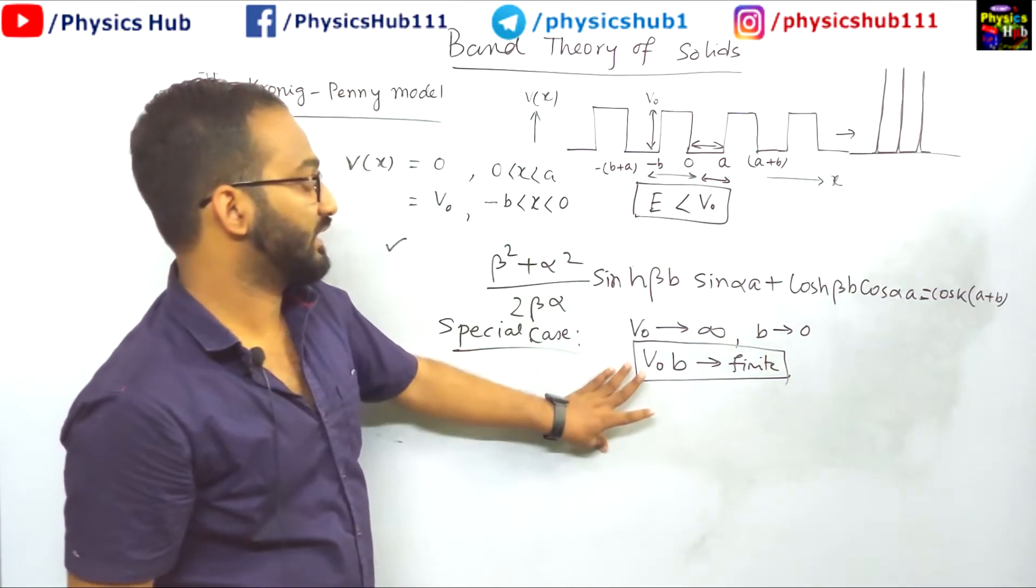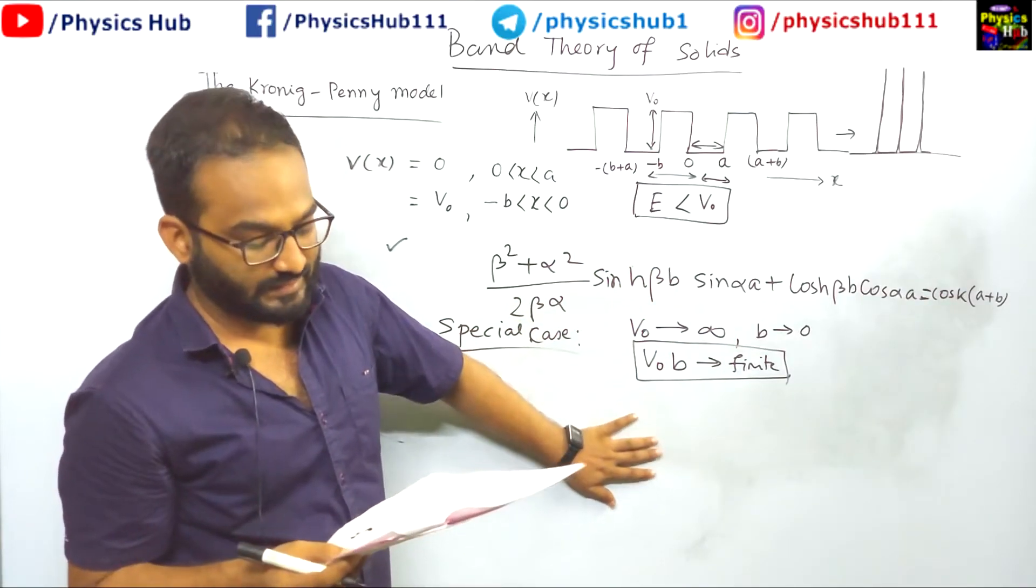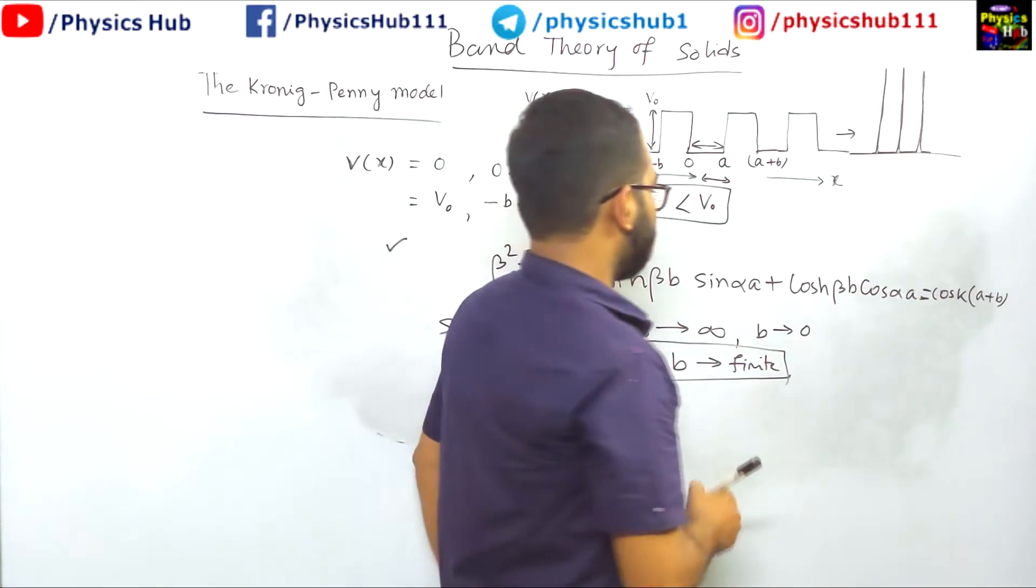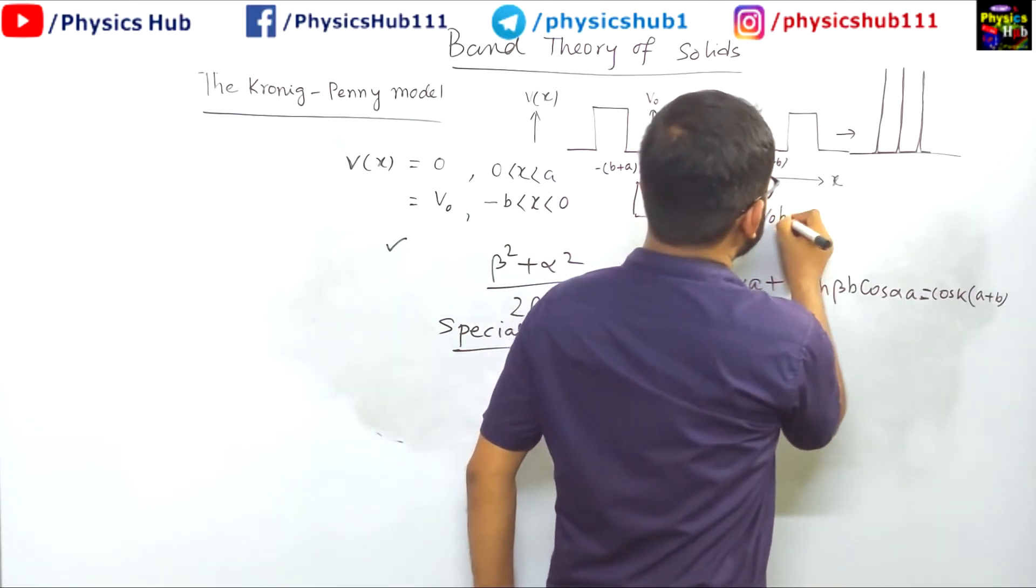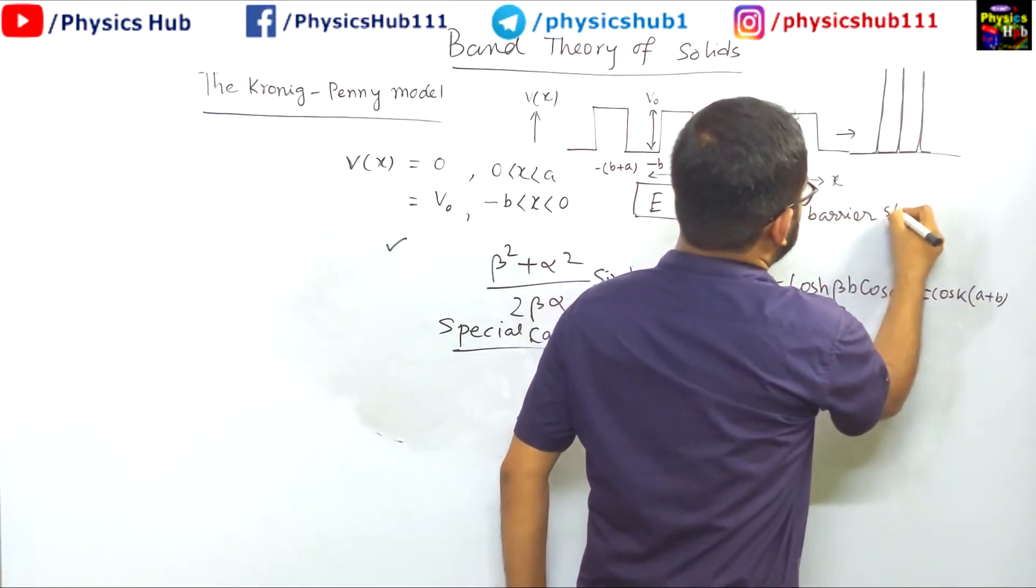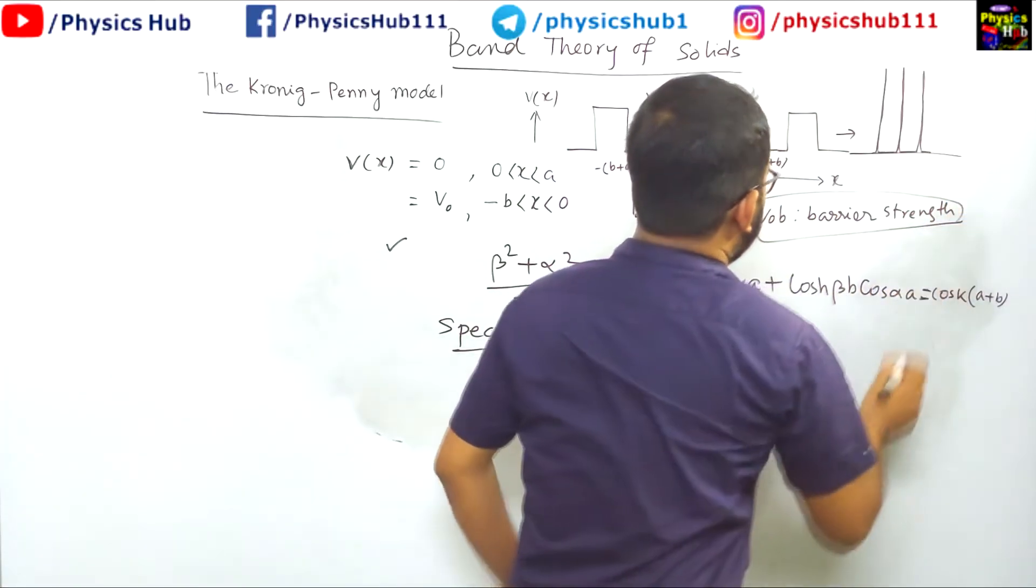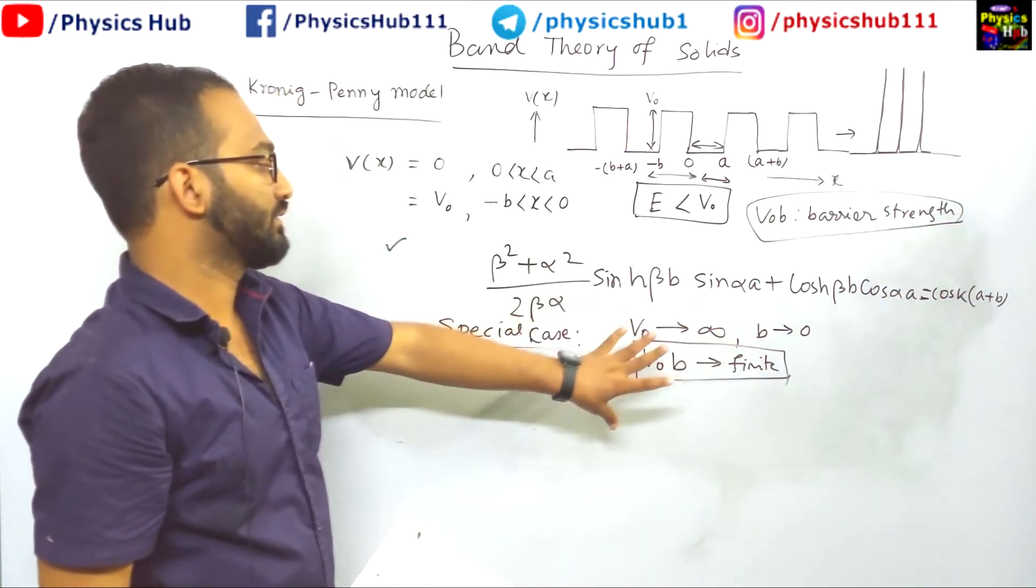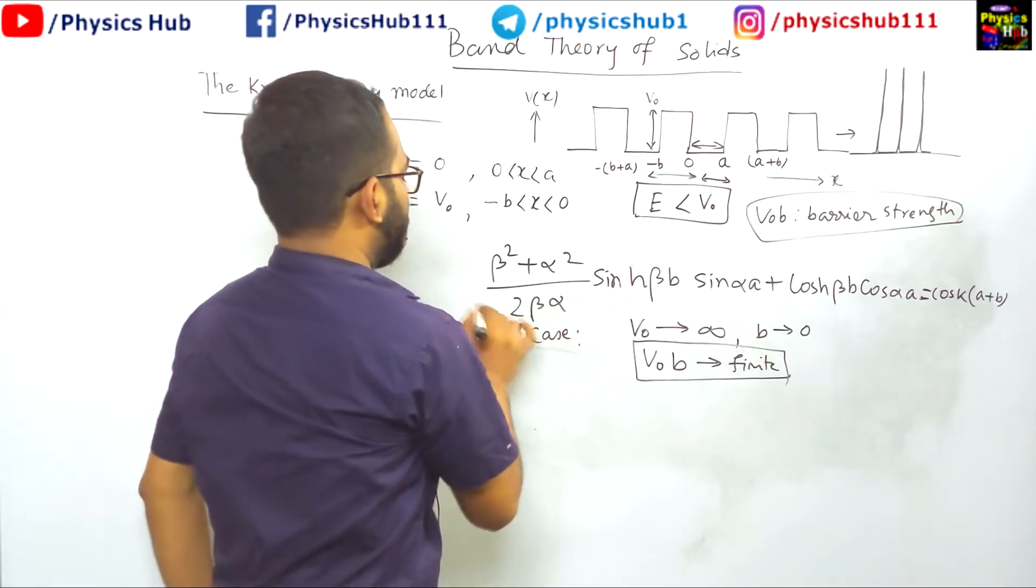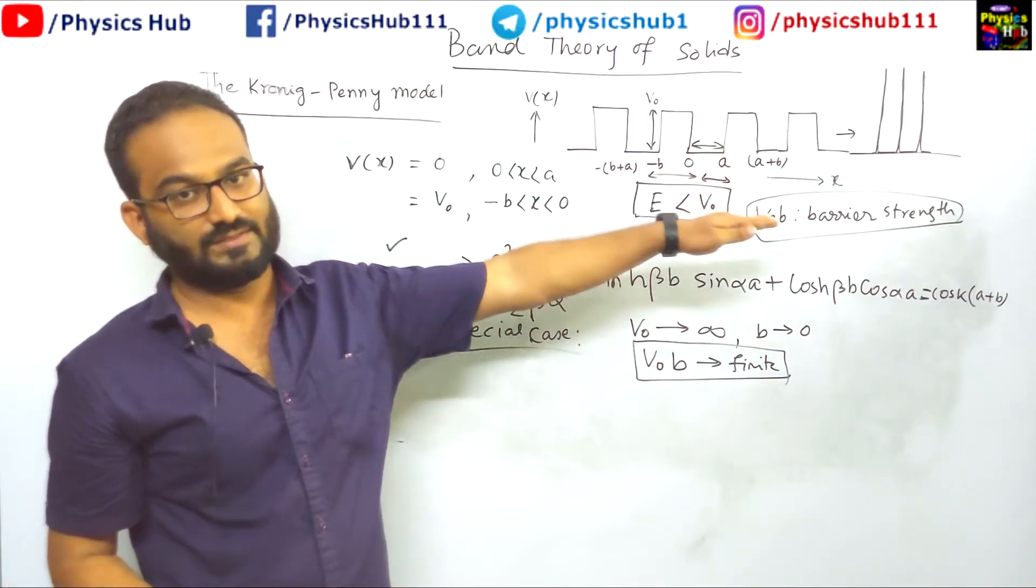And V₀ tends to infinity, b tends to 0, but the product V₀b is finite. So after taking this special case we will see some interesting output, interesting result. This V₀b is called the barrier strength. And after considering this thing, we will use these values into this equation and we will see how it gives rise to different bands.